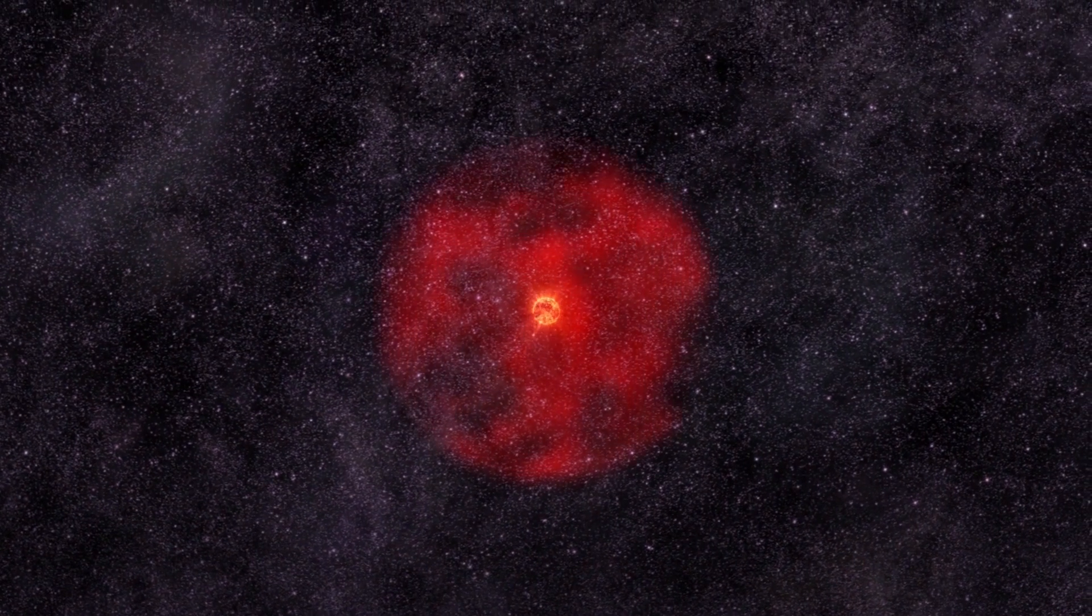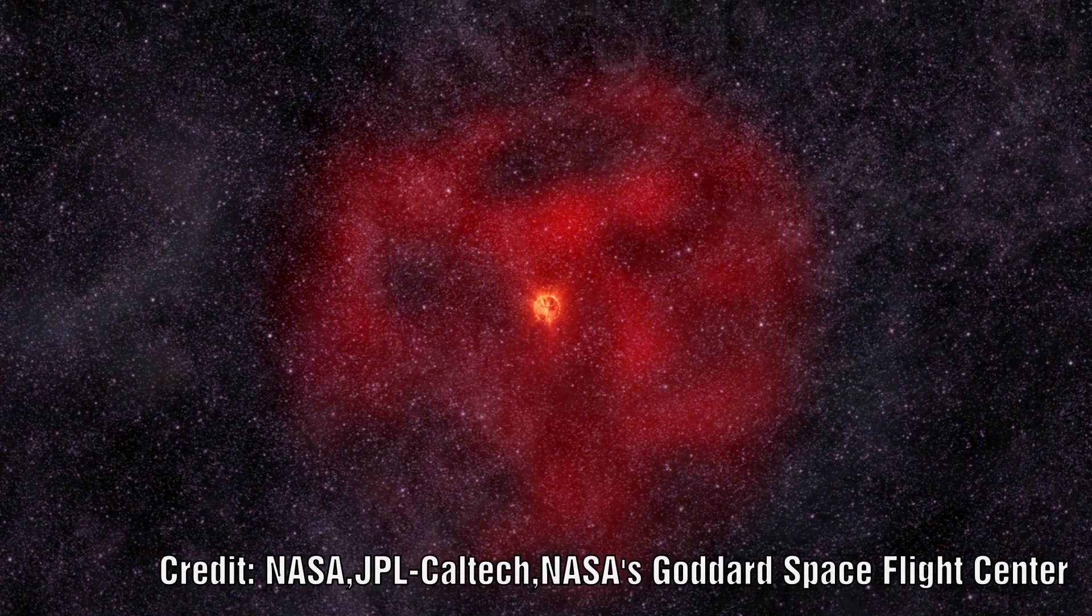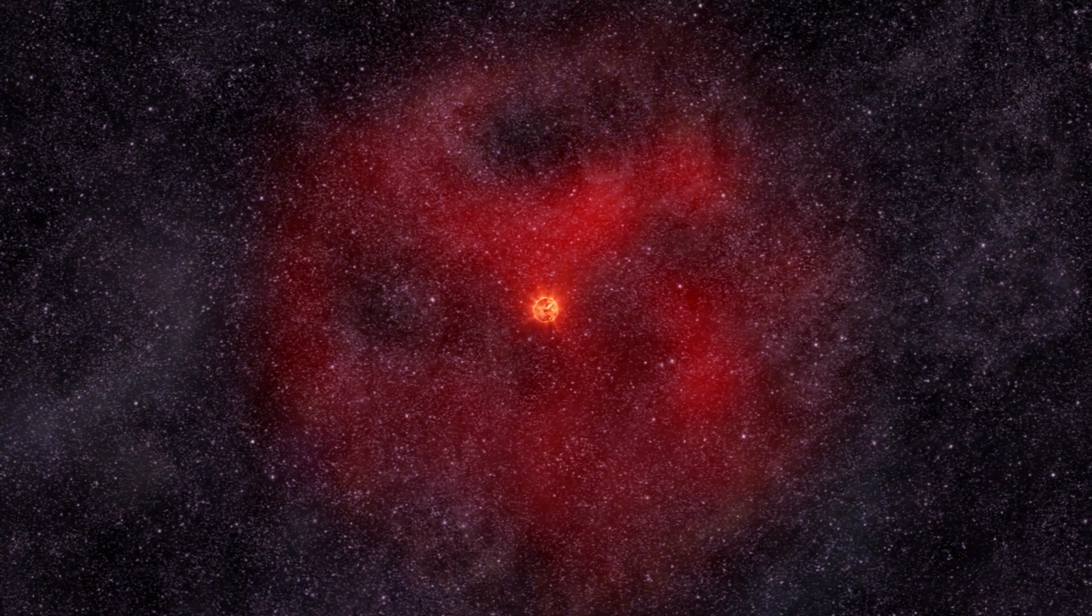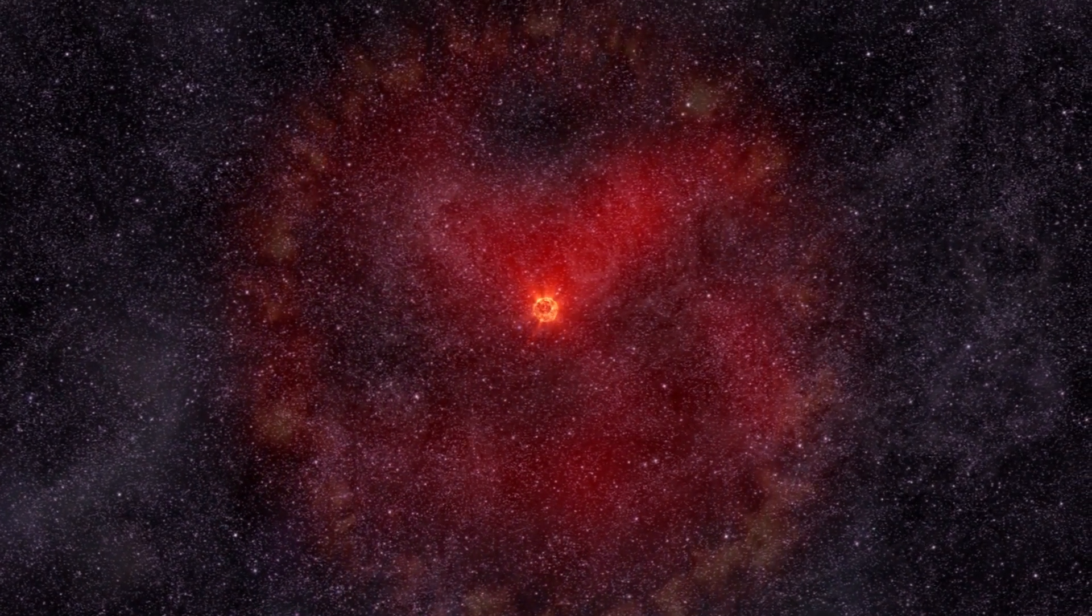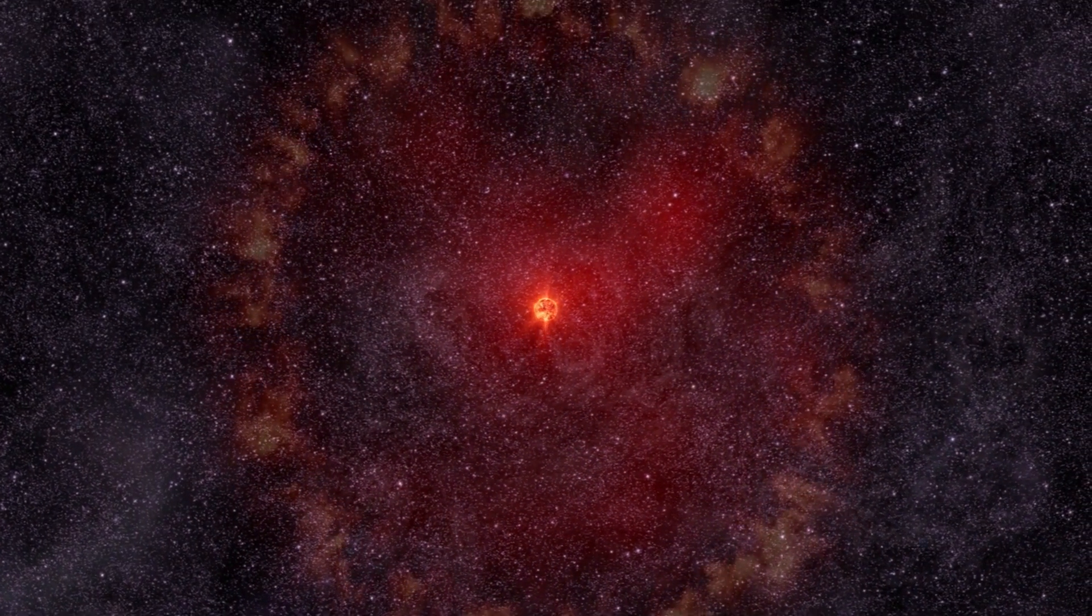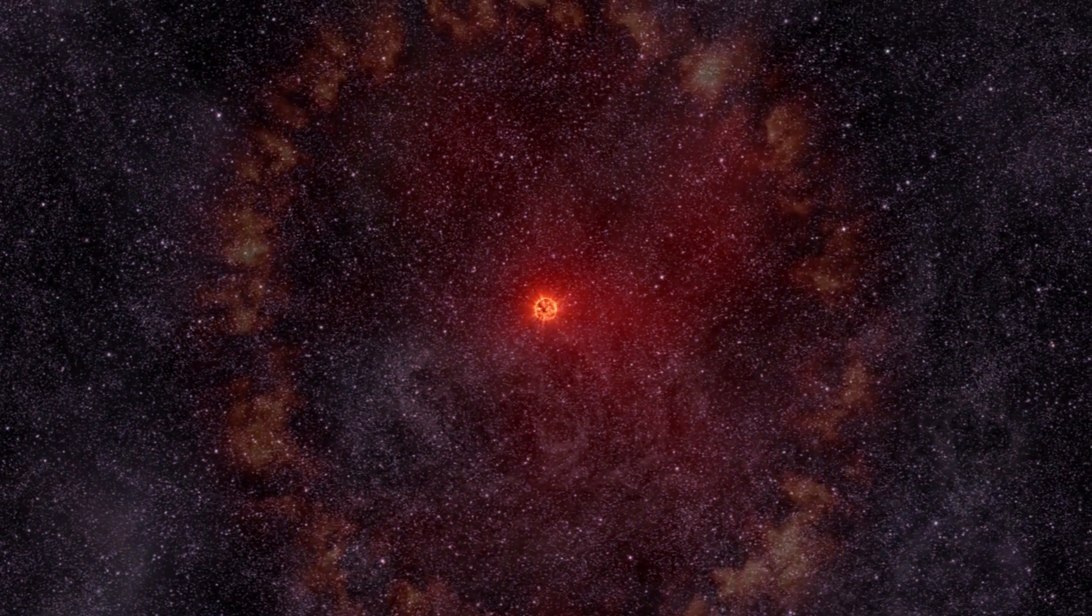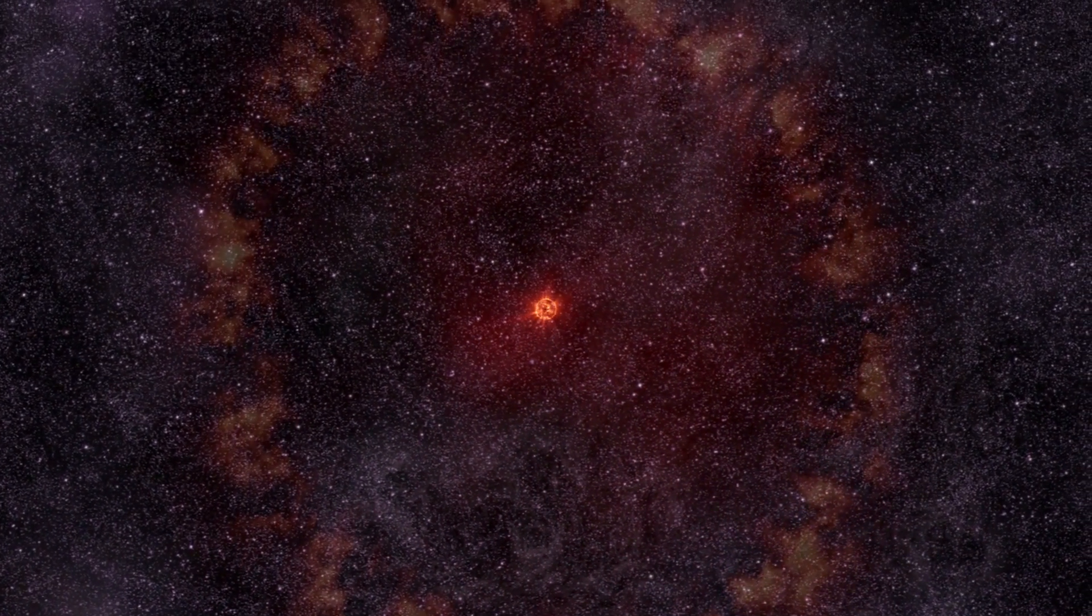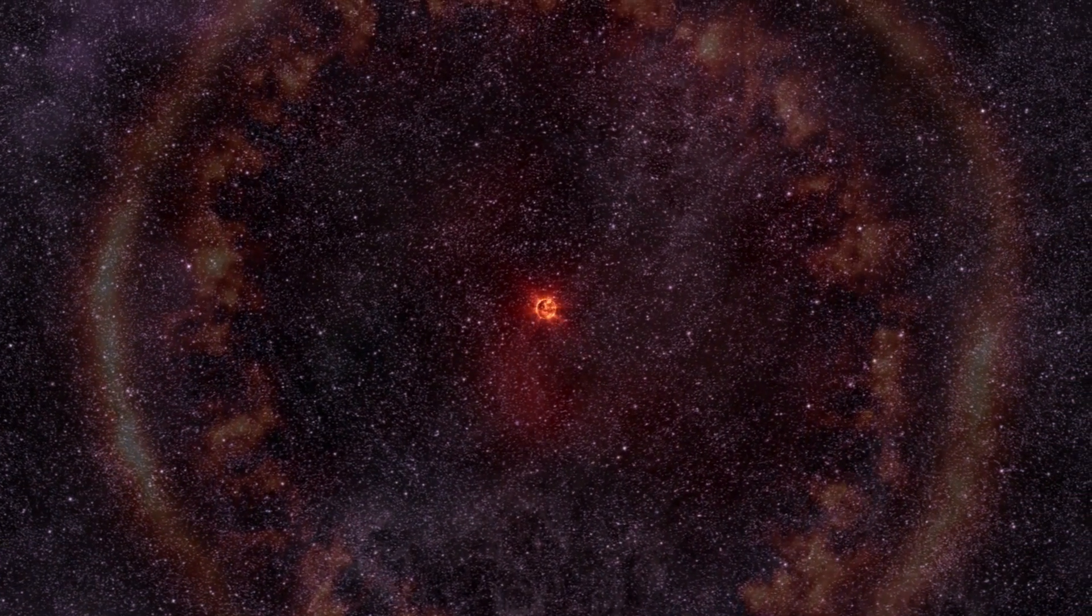Also, where is the ejected material from this event? And the event that I am referring to is the red giant ejecting its shell. Surely this would leave something like an expanding shell or nebula visible to some extent and should have a dimming effect on the star and its companion.